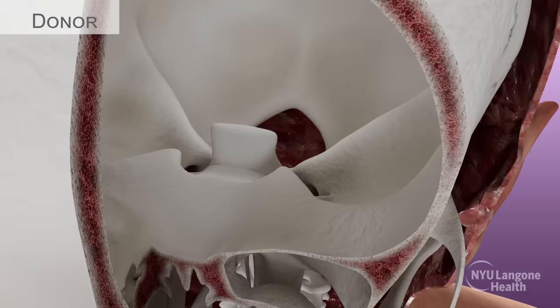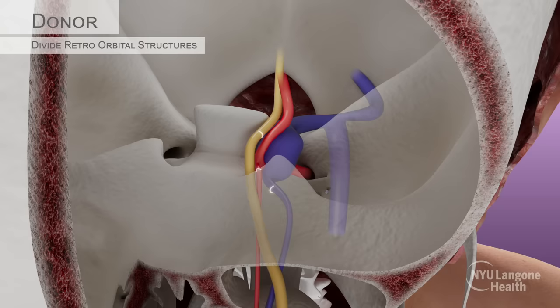The orbital box osteotomy was then translated forward to allow for access to the retroorbital structures, including the ophthalmic vein, artery, and the optic nerve.